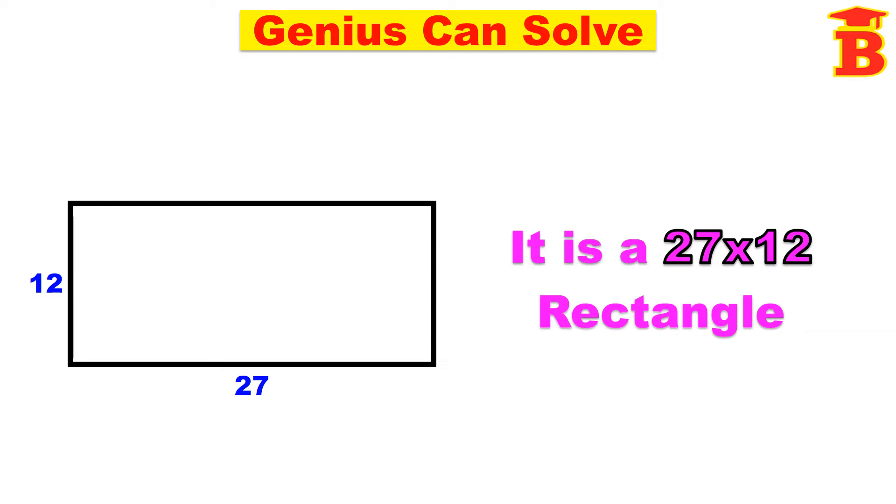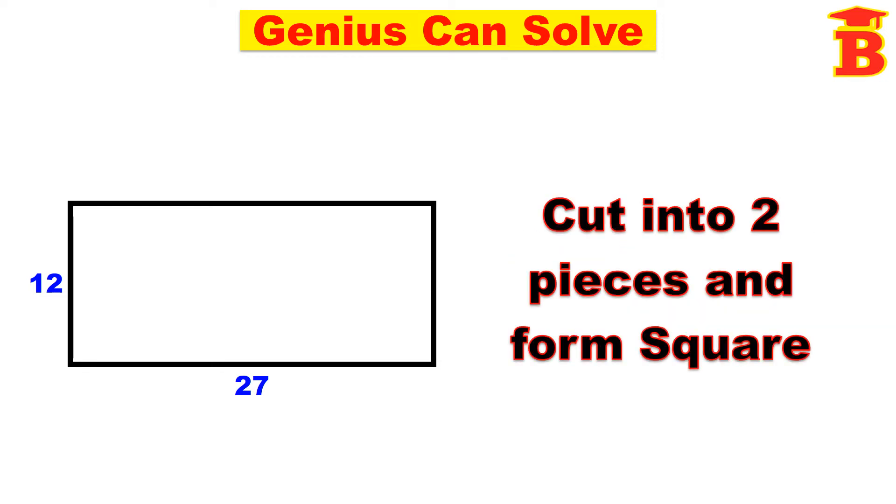That means the length of the rectangle is 27 units and the breadth of the rectangle is 12 units. Now the question is that we have to cut the rectangle into two pieces and form a square.